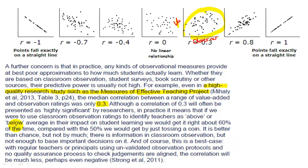In practice, if we were to use classroom observation ratings to identify teachers as above or below average in their impact on student learning, we would get it right about 60% of the time. So it's not bad, but it's still not good. You wouldn't want to be sacked or have pay decisions made based on observations. It's not much better than chance. There is information in classroom observation, but not enough to base important decisions on it.